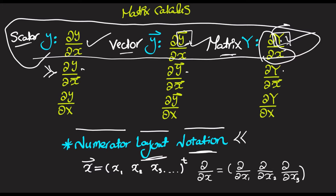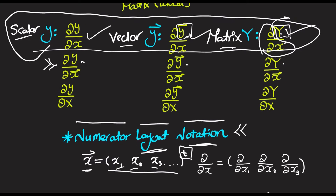For the numerator layout notation, you take the transpose of the vector x with respect to which you're differentiating. In the last video, it was always a scalar x, so it made no difference. But starting from here, before taking the derivative, we'll have to take the transpose of what we're differentiating with respect to. So if we have a column vector x1, x2, x3, then partial over partial x is just applied to each element, and you apply the transpose.